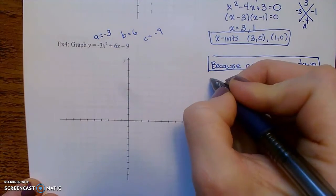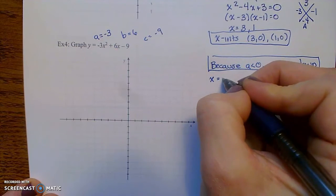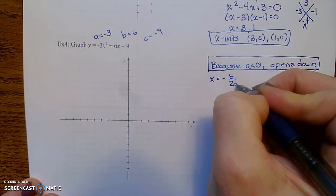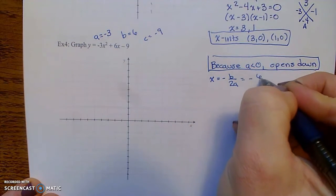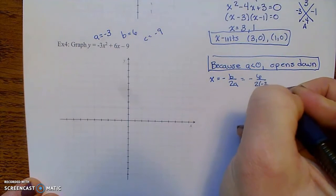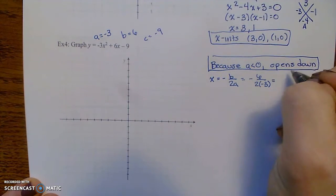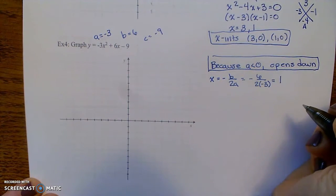Also, we can calculate the vertex by doing negative b over 2a. So that will be negative 6 over 2 times negative 3. So that's negative 6 over negative 6, which is a positive 1.